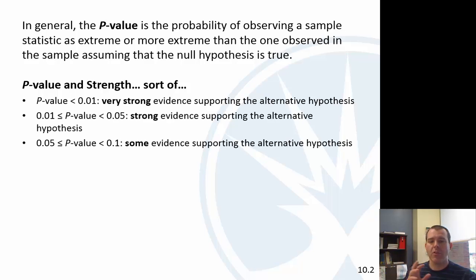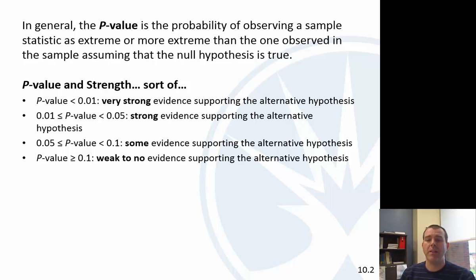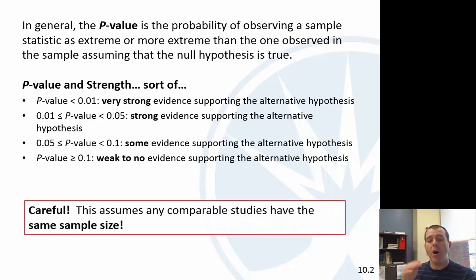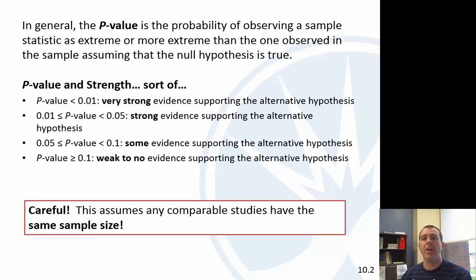If you have a p-value greater than 0.1, that means there's not a lot of evidence to support your alternative hypothesis. There's a huge caveat: hypothesis tests can be affected by sample size. Big sample sizes can lead to very small p-values even though the difference might not practically be that big. We can only compare p-values if the sample sizes are the same, because those probabilities are affected by sample size.